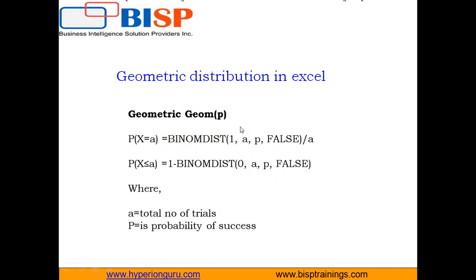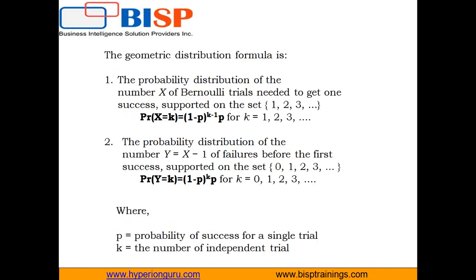The second formula of the geometric distribution is used for modeling the number of failures until the first success. This is how the manual calculation is done for the geometric distribution, where P is the probability of success and k is the number of independent trials.